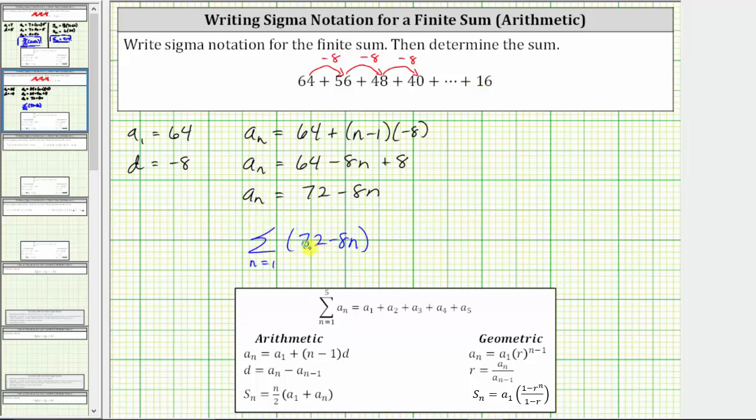So to determine this value, we will set the formula 72 minus 8n equal to 16, and solve for n. So doing this, we have 72 minus 8n equals 16.